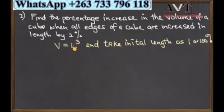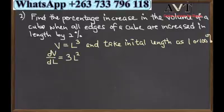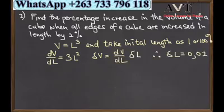Therefore we are going to check our initial values: 1 is 100%. Then we differentiate this, so dV/dL becomes 3L². And our change in V is demanded by the formula dV/dL times the change in L.